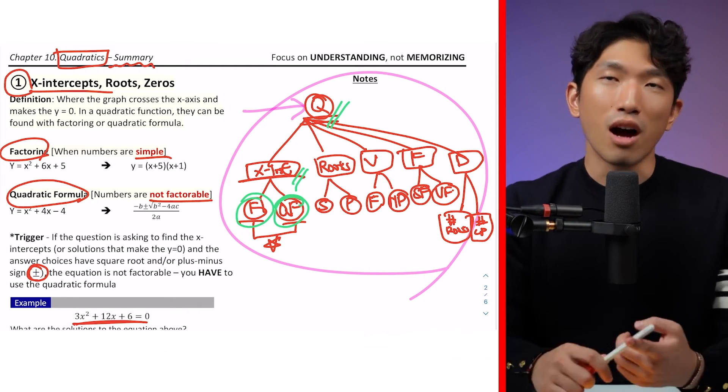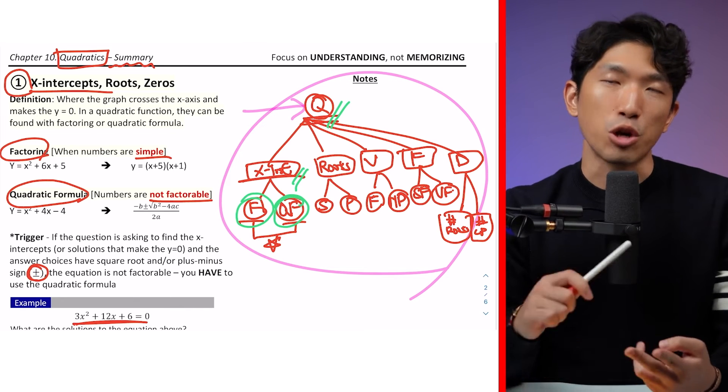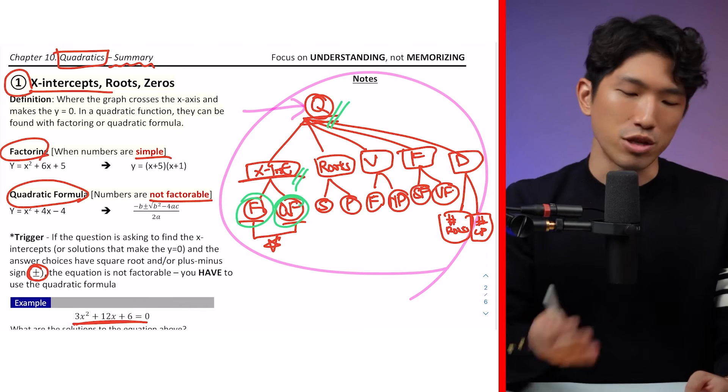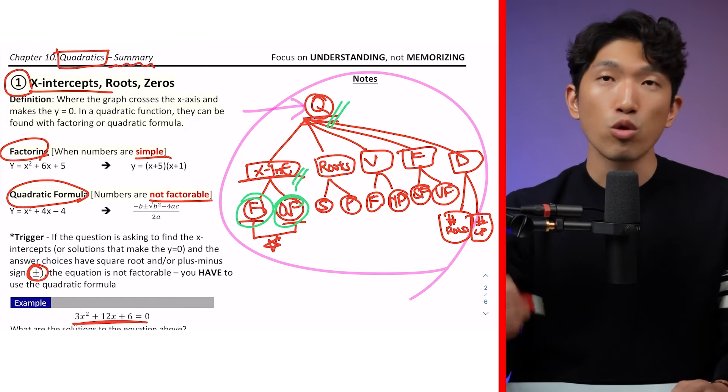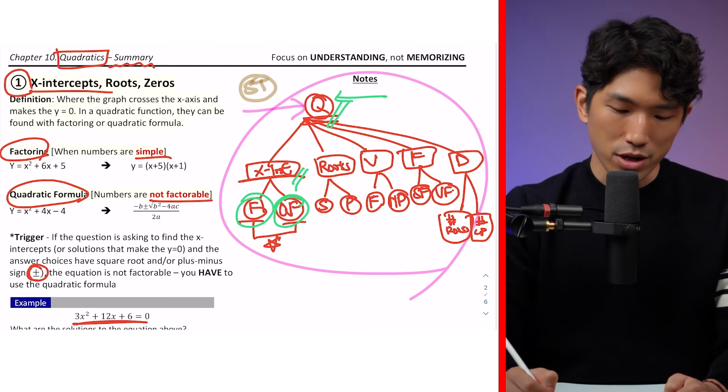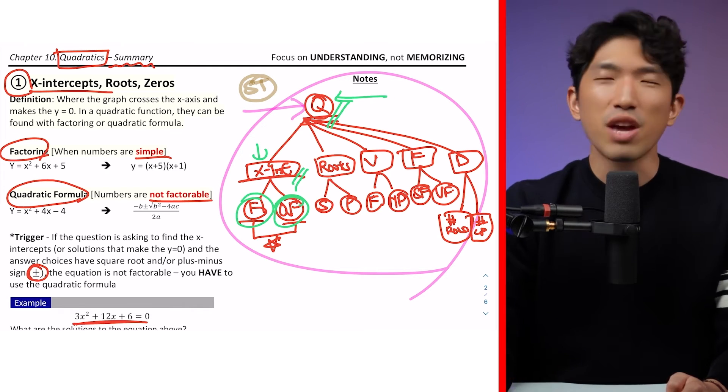Having the mastery of the concept is what allows you to solve every single question correctly. But SAT, there is a time limit. You not only have to solve these questions correctly, but also quickly. Which brings us to the second part, also known as the speed training.